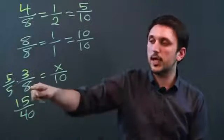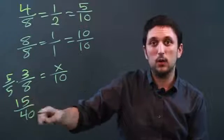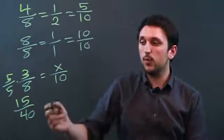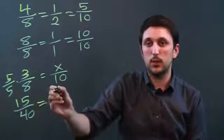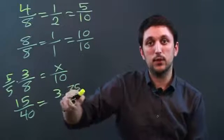So to get 3 eighths to look like something that would relate to tenths, we have 15 over 40. Now, if you wanted that to be a tenth, it would have a decimal. It would be 3.75 over 10. But your math teacher will probably kill you for this.